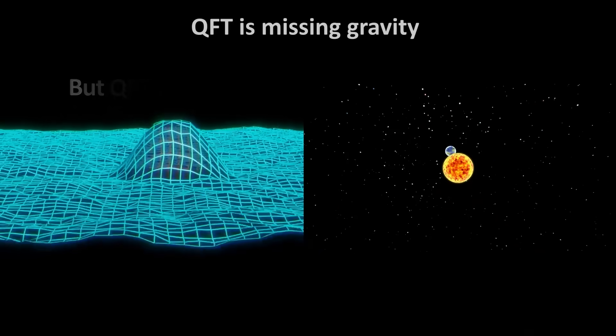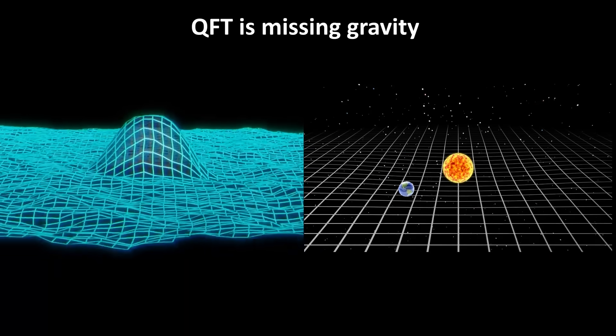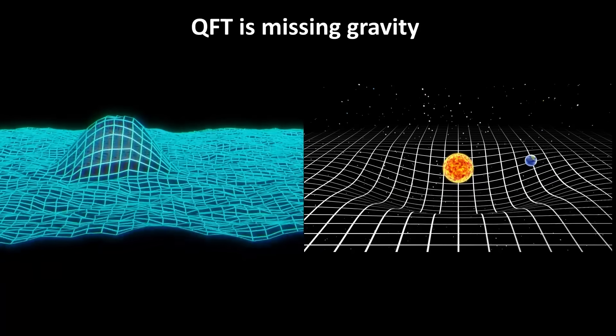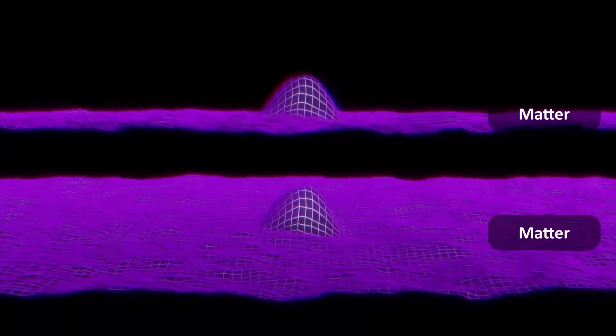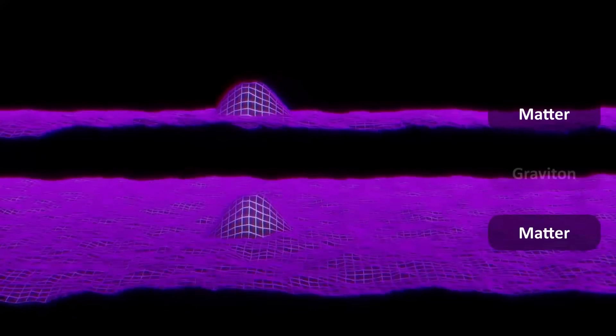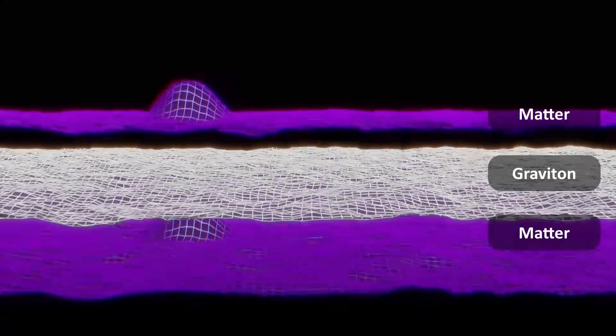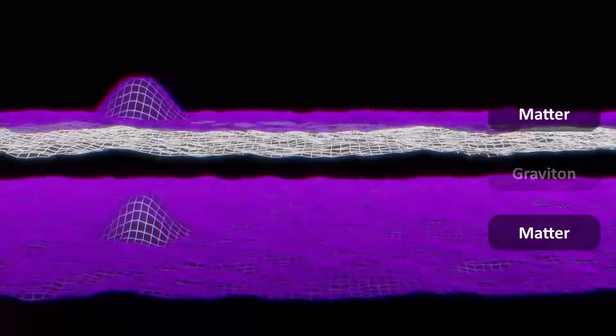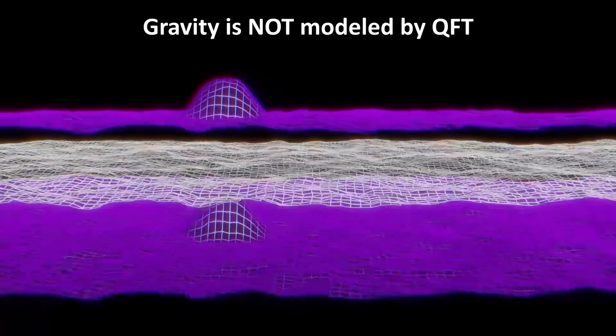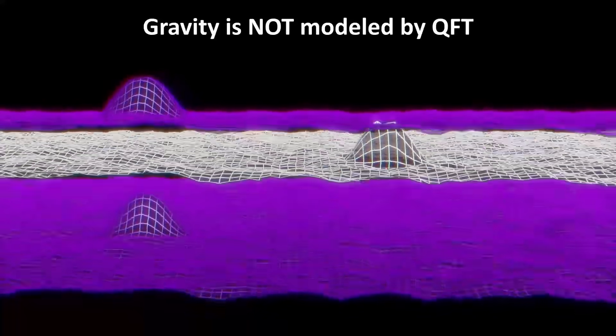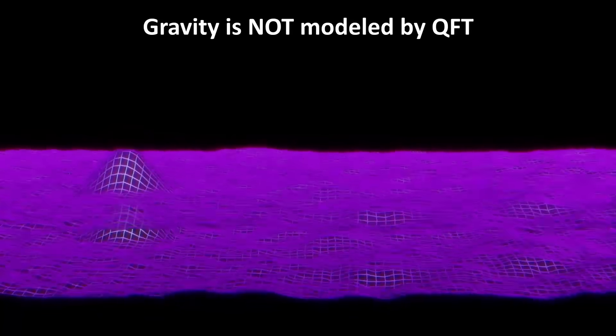For example, it is still missing gravity. We do not have a quantum field theory for gravity. If we did, it would mean that we could model a field for the theoretical graviton particles, and gravity would be mediated between matter particles by the exchange of this graviton boson. So even QFT, which is extremely accurate for the forces and particles we do know about in the standard model, remains as yet incomplete.